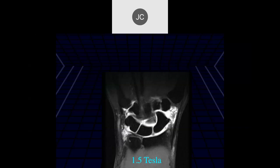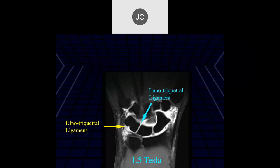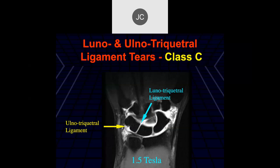This is actually from a different location, and here we can see fluid going through the lunotriquetral area. What we're seeing here actually turned out to be a lunotriquetral ligament tear, which made this a class C at the time of surgery. The patient also had a lunotriquetral ligament tear.